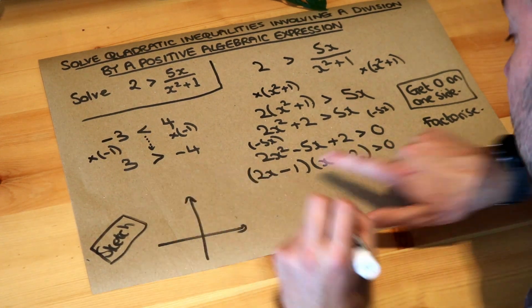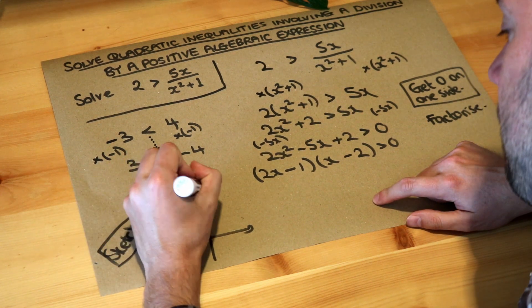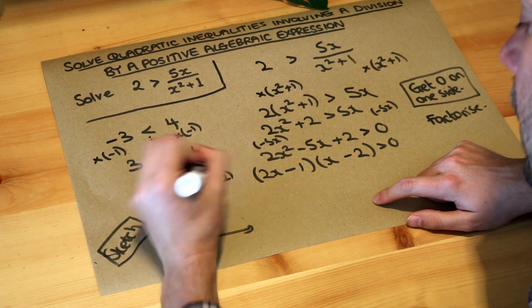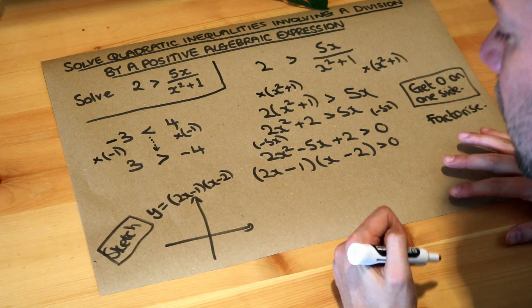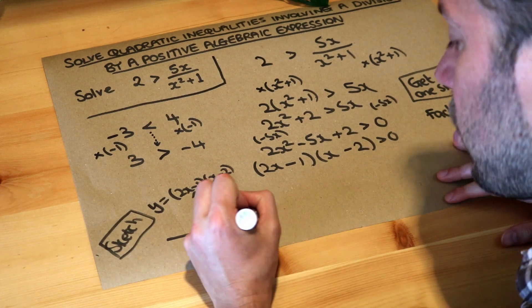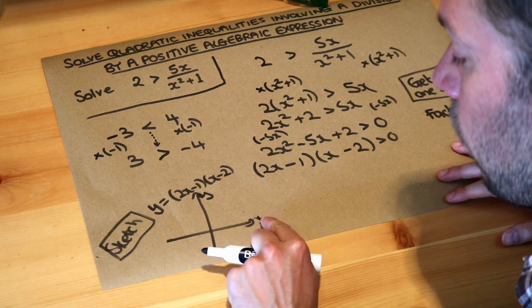So we're going to sketch specifically this. So we're going to sketch y equals 2x minus 1 times x minus 2, and then we explore this in previous videos and particularly look at my videos about how to sketch a quadratic.